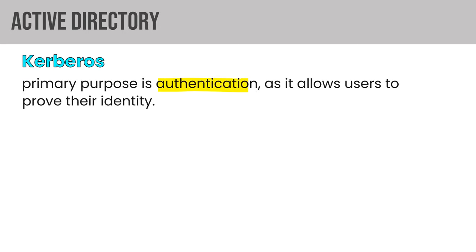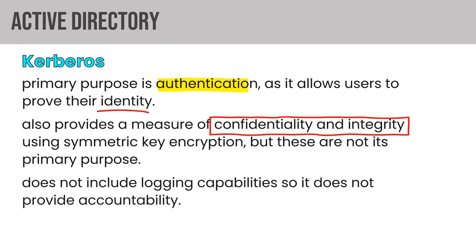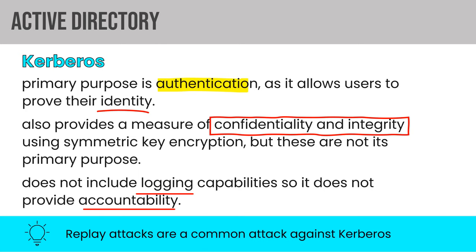Kerberos is the primary authentication protocol with Active Directory on premises. Its primary purpose is authentication — allowing a user to claim and prove their identity. It also provides confidentiality and integrity using symmetric key encryption, though those are not its primary purpose. Kerberos doesn't include logging capability, so it doesn't provide accountability on its own. Replay attacks are a common attack against Kerberos, where the authentication sequence is captured and replayed. A pass-the-hash attack involves dumping the hashed password from memory and using it in lateral movement attempts.